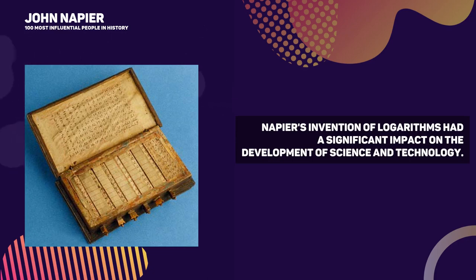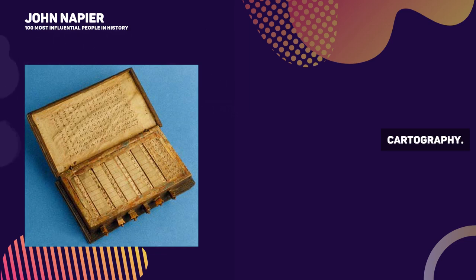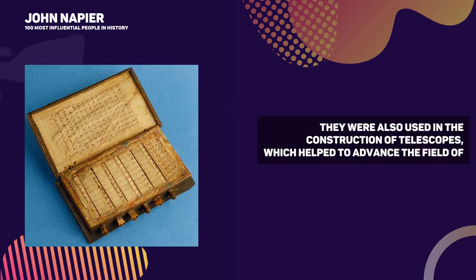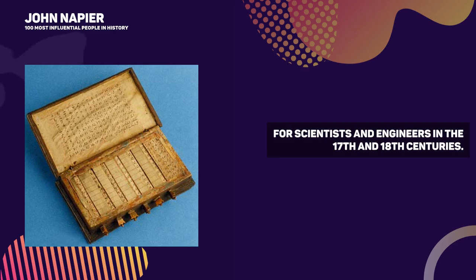Napier's invention of logarithms had a significant impact on the development of science and technology. Logarithms were used to calculate the positions of stars and planets, which greatly improved navigation and cartography. They were also used in the construction of telescopes, which helped to advance the field of astronomy, and in the development of the slide rule, a popular calculating tool for scientists and engineers in the 17th and 18th centuries.